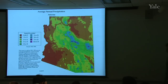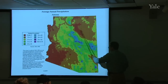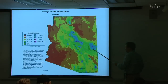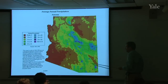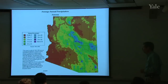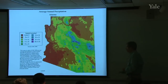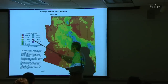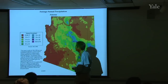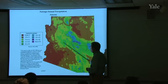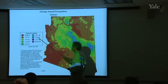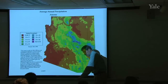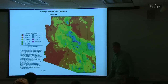Arizona is complicated because it has mountains in certain areas and low-lying areas, but the high precipitation is pretty much controlled by the mountains. Generally it's a pretty dry state. The highest precipitation — about 32 inches — is up in the highest mountains.